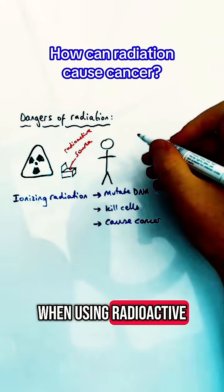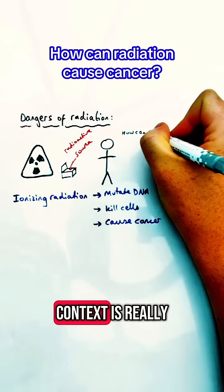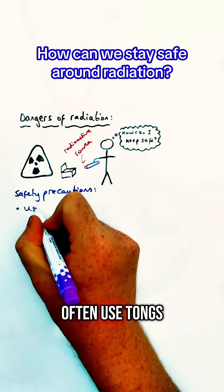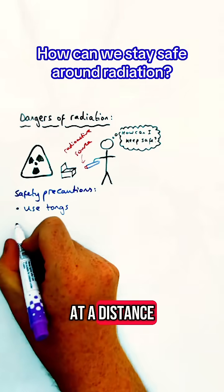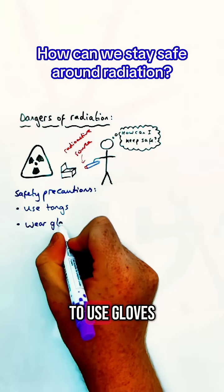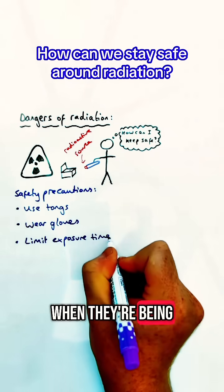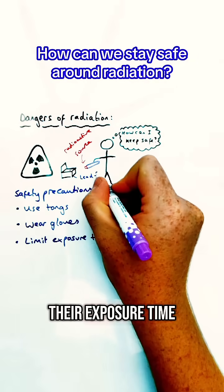When using radioactive sources in a classroom context, it is really important to stay safe for these reasons. Your teacher will often use tongs to handle them at a distance from their body. They are likely to use gloves as well and only ever keep the sources out from their lead-lined box when they're being used to minimize their exposure time.